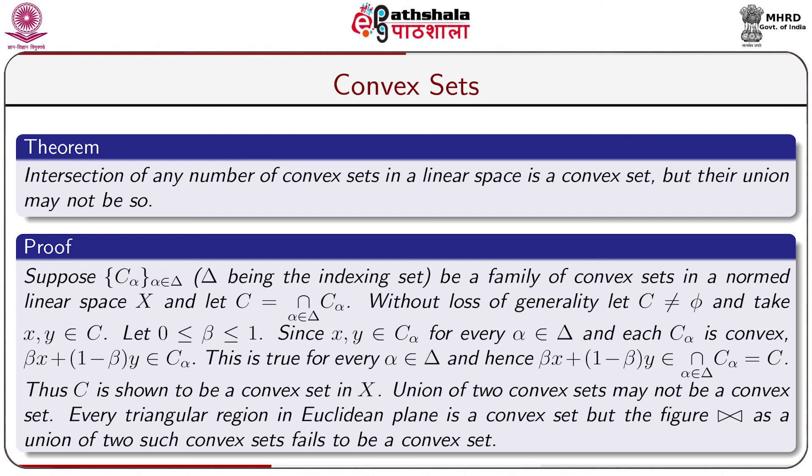Union of two convex sets may not be a convex set. Every triangular region in the Euclidean plane is a convex set, but the union of two such triangles — a left-hand and a right-hand one — fails to be a convex set.